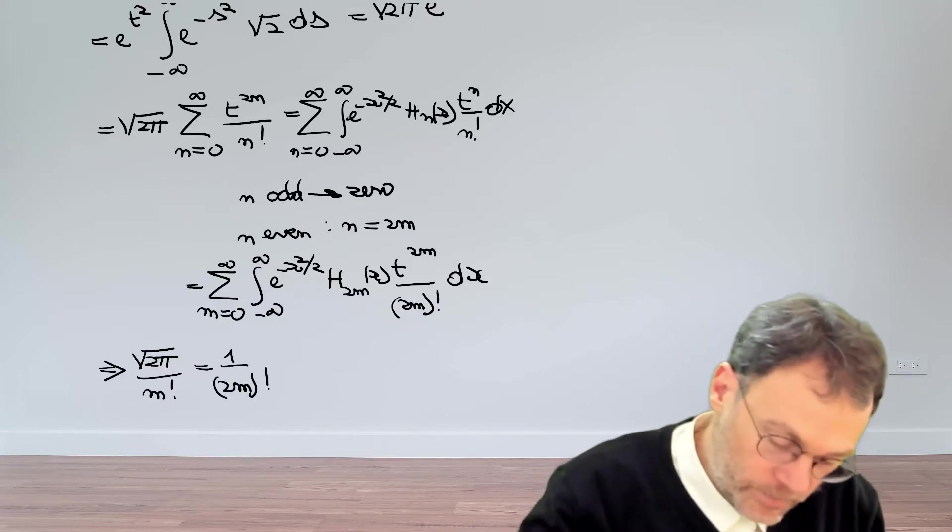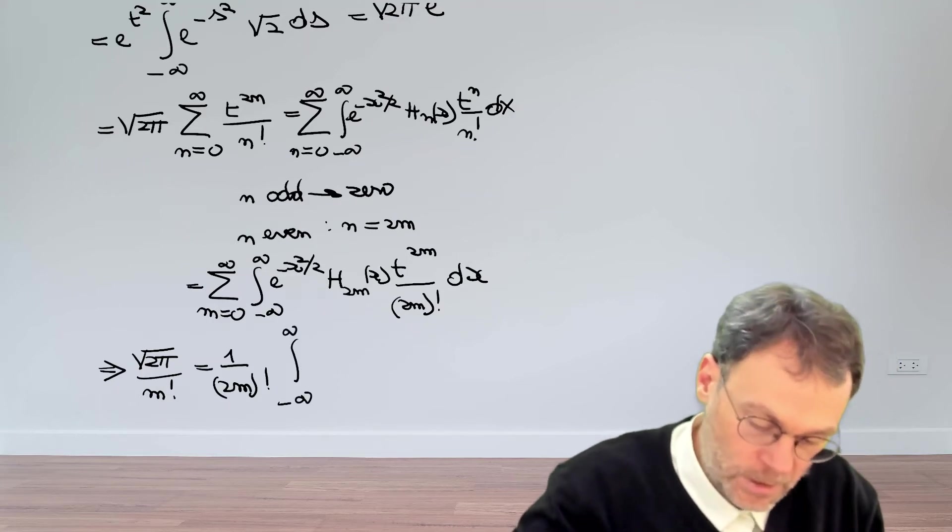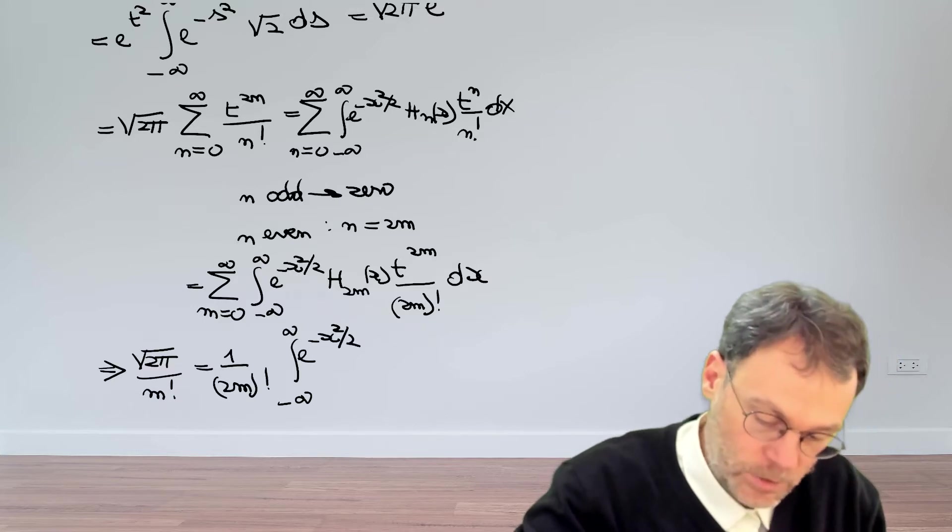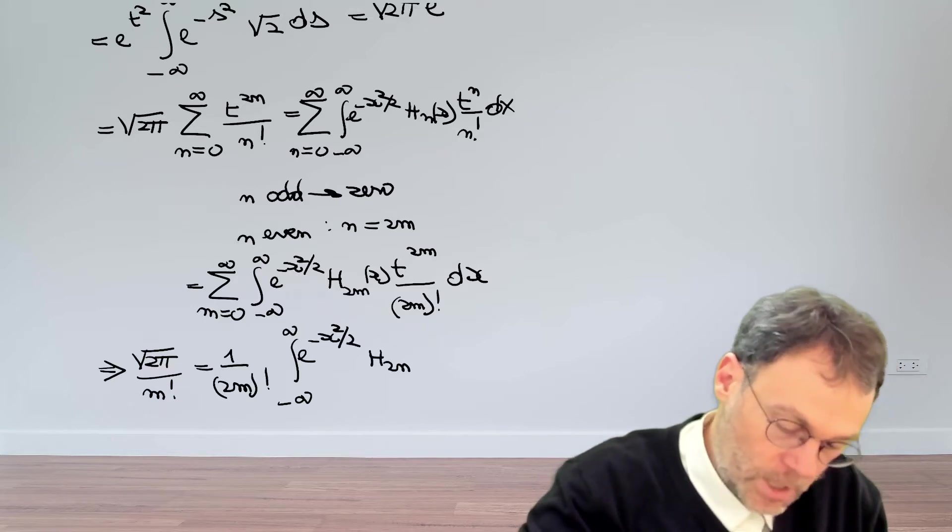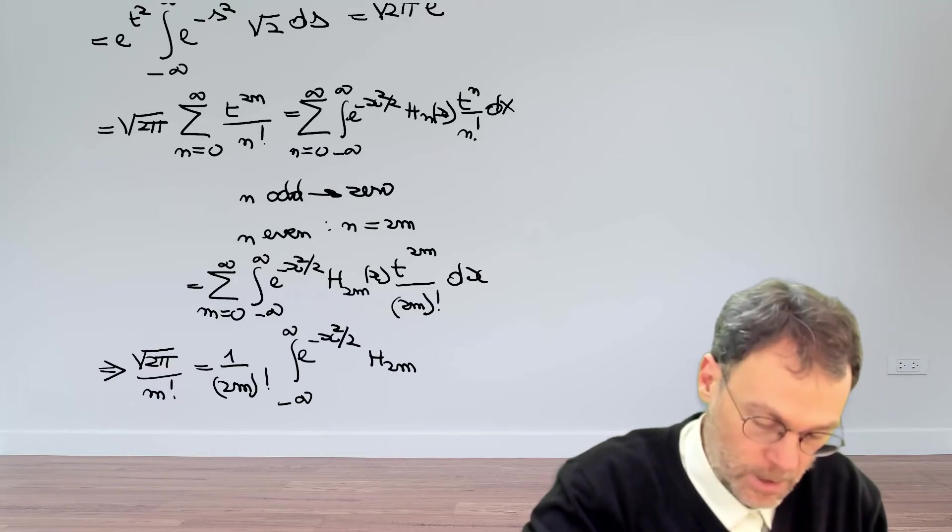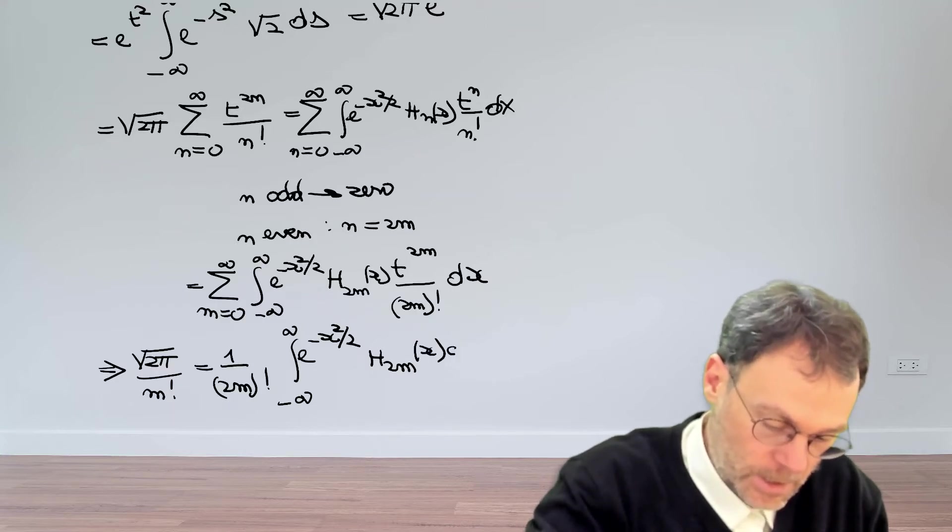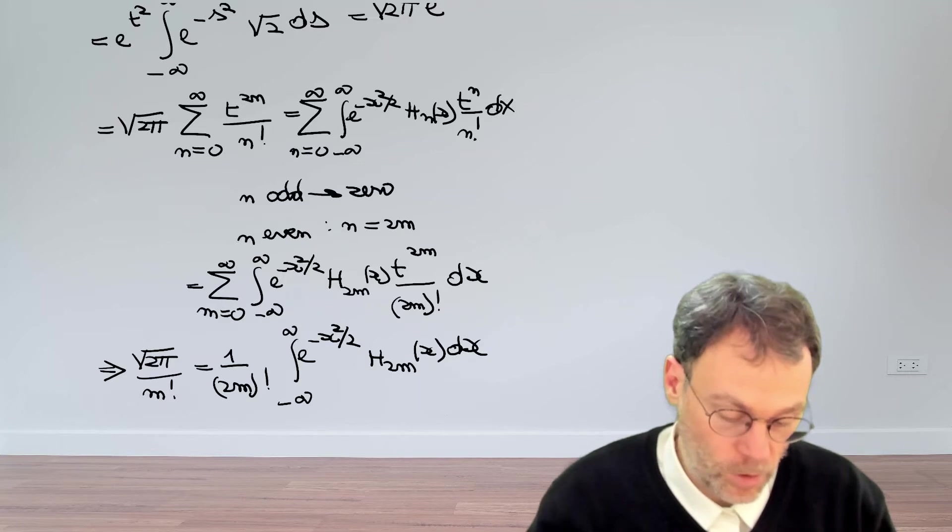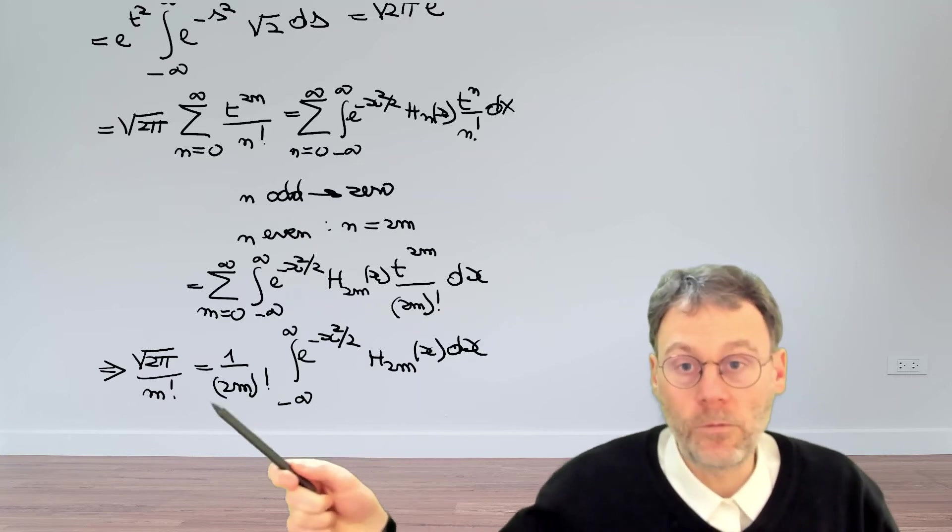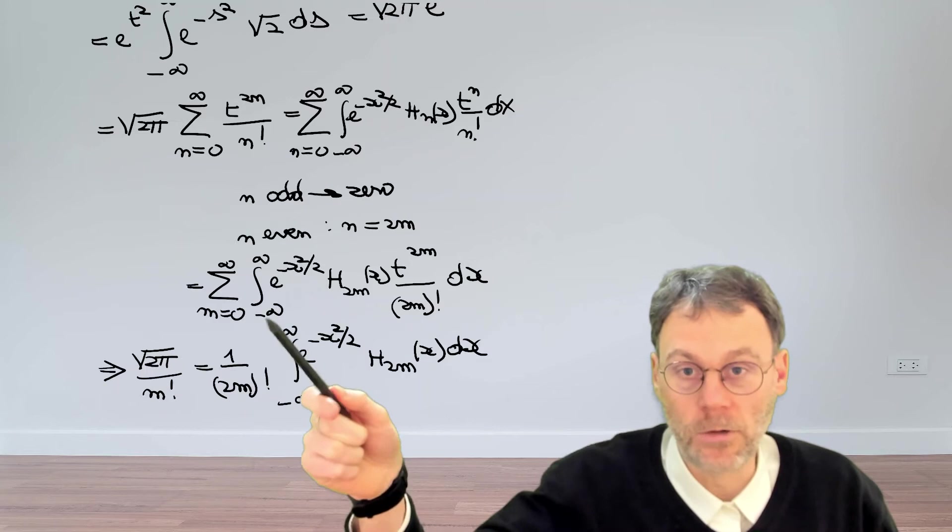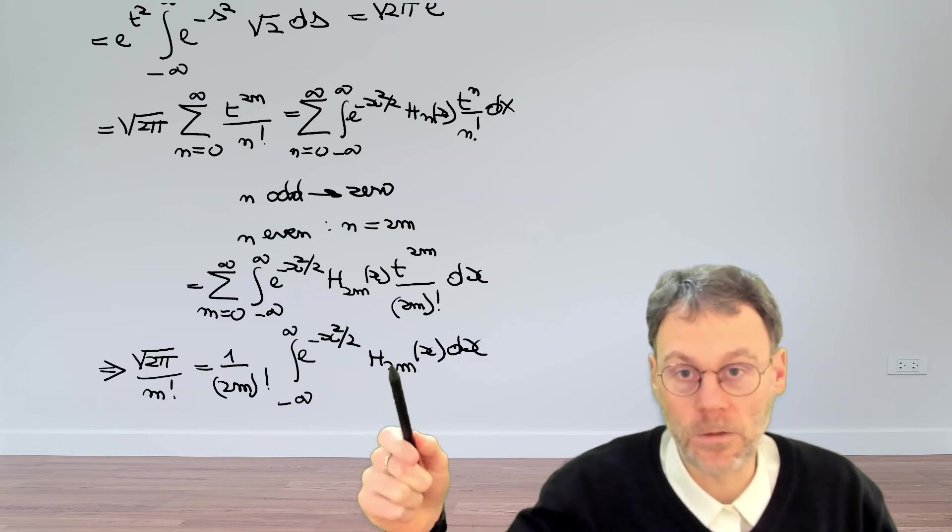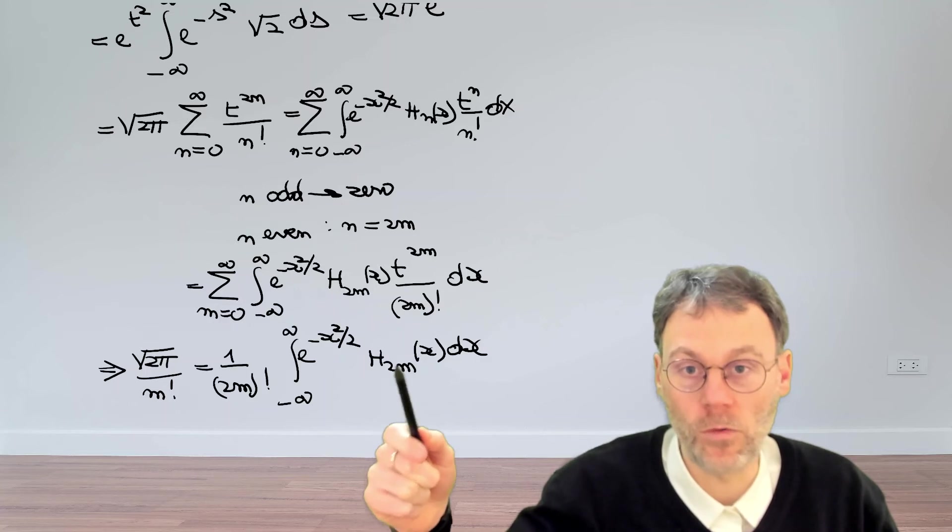And then we have the integral that we're interested in, integral from minus infinity to plus infinity, exponential minus x squared over 2, h_2m x dx. Just identifying t to the power of 2m. And then we bring this thing over here. But the end result is that we have calculated this particular integral, at least for the only case where it's non-zero, where you have an even order of the Hermite polynomial, and for an odd order it's just zero.